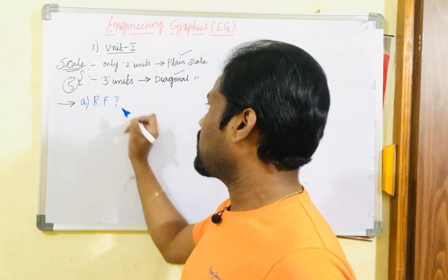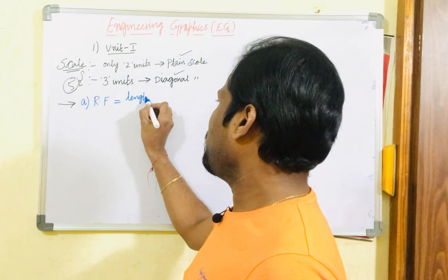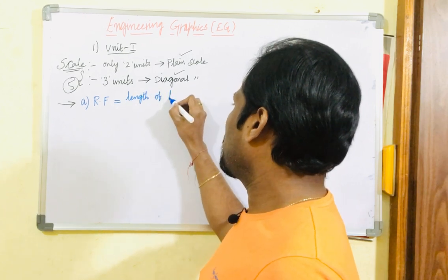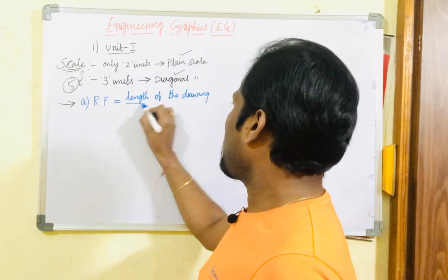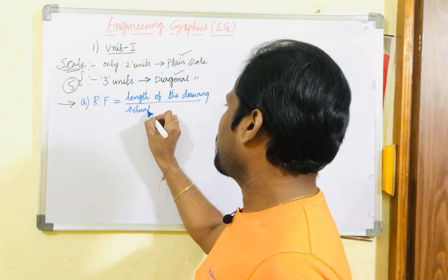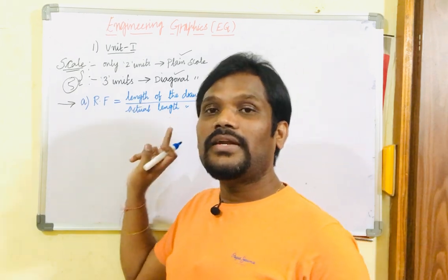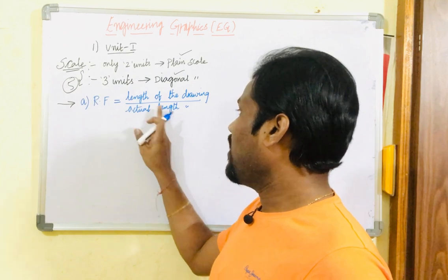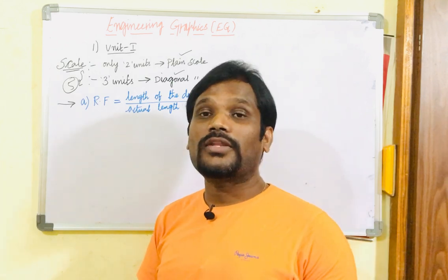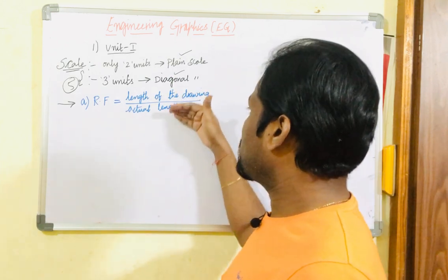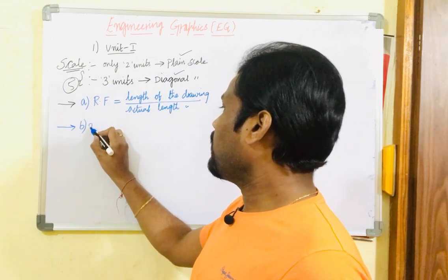Once the identification is done, check whether the RF is given in the question paper. If not, you must work out the RF based on the definition: length of the drawing divided by the actual length. The given question will have a certain length of the drawing and the actual length. If given in terms of area, use area; if in terms of volume, use volume. Convert both into similar units and work out the RF.